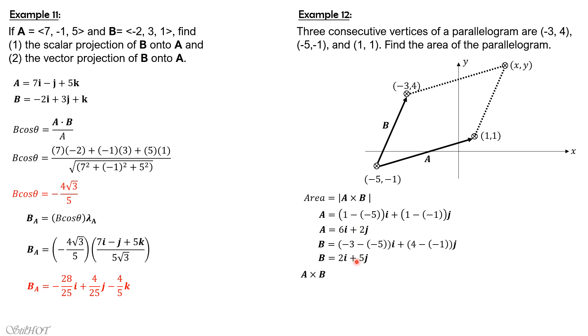So we now obtain the cross product. So remember that i cross i is 0. So we only have 6i cross 5j. So 6 times 5 is 30. Then i cross j is k, positive k.